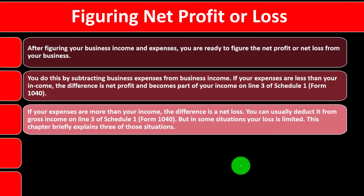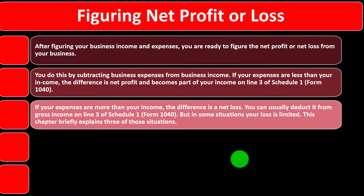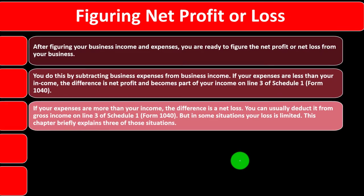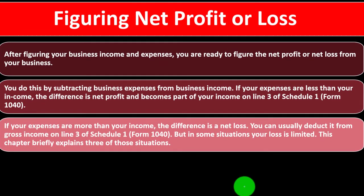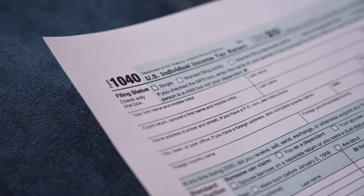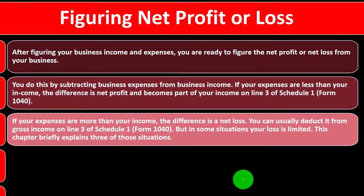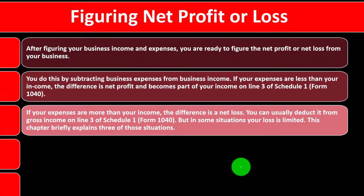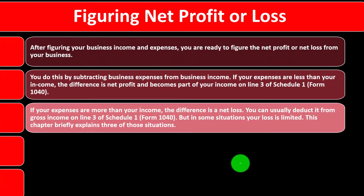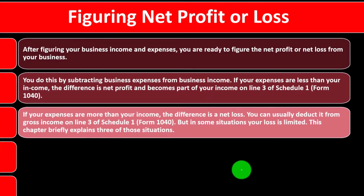If your expenses are more than your income, the difference is a net loss. You can usually deduct it from gross income on Line 3 of Schedule 1, Form 1040. That loss rolls into Schedule 1 and then flows to Page 1 of Form 1040 as essentially a negative number, acting like a deduction in the income area of the return.